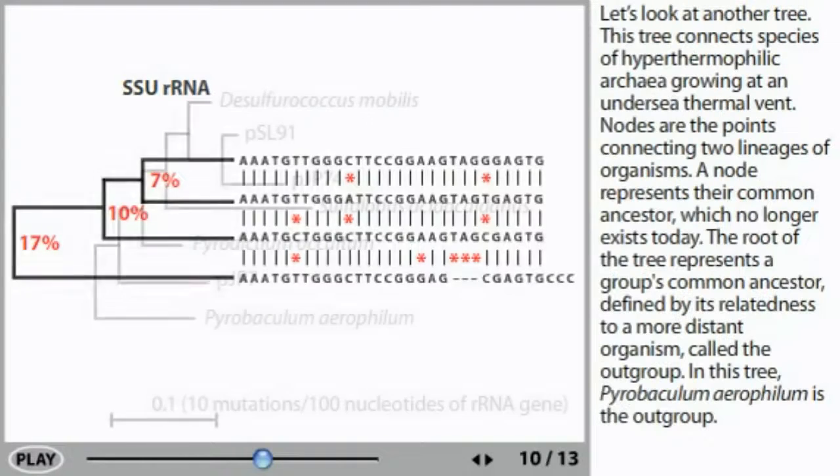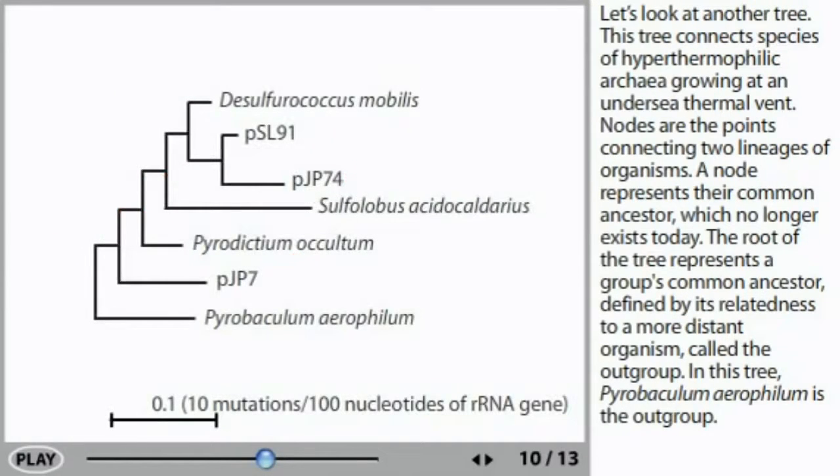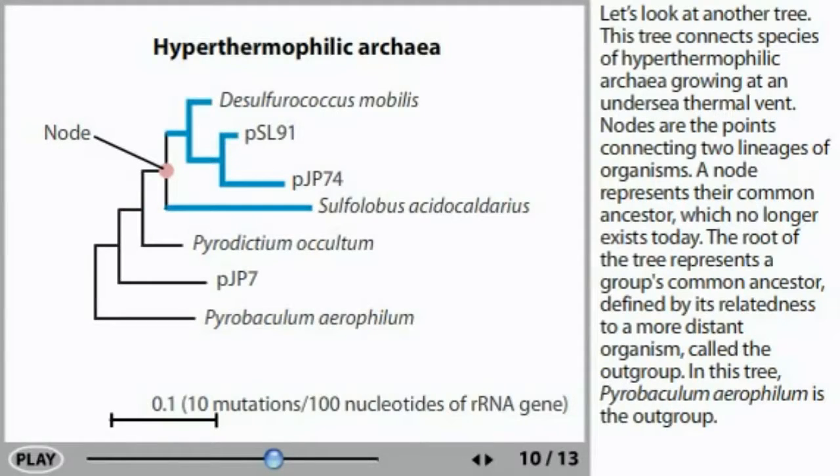Let's look at another tree. This tree connects species of hyperthermophilic archaea growing at an undersea thermal vent. Nodes are the points connecting two lineages of organisms. A node represents their common ancestor, which no longer exists today. The root of the tree represents a group's common ancestor, defined by its relatedness to a more distant organism called the outgroup.